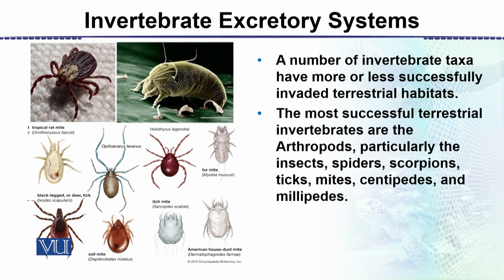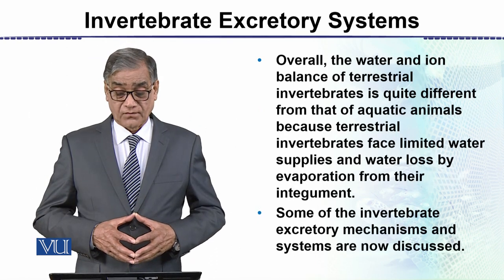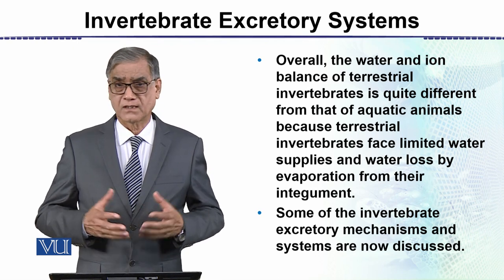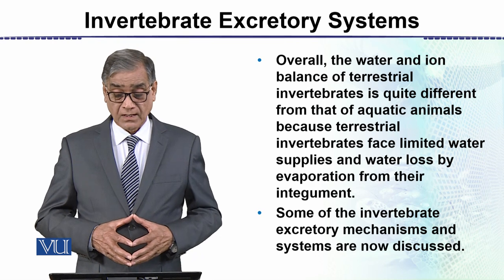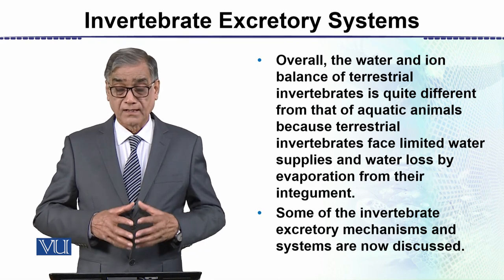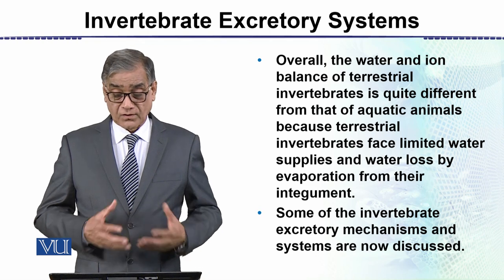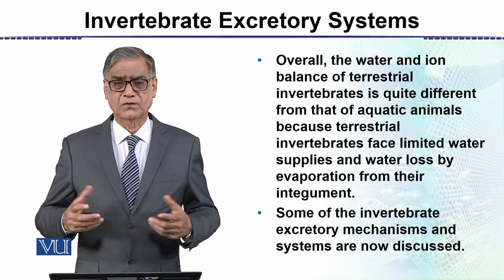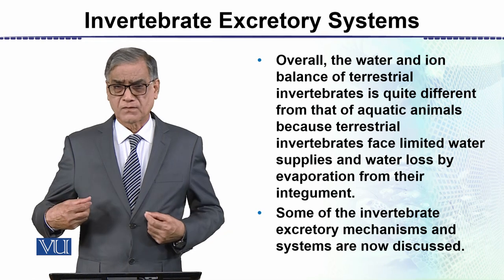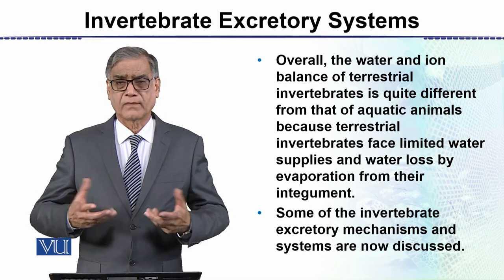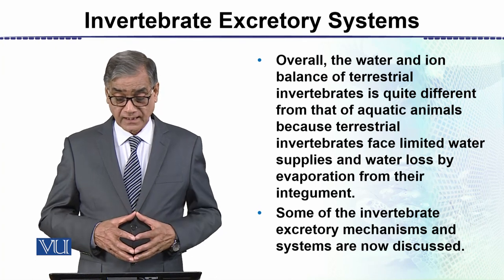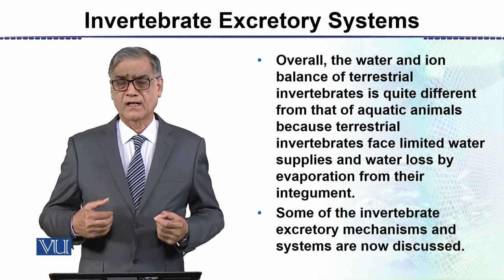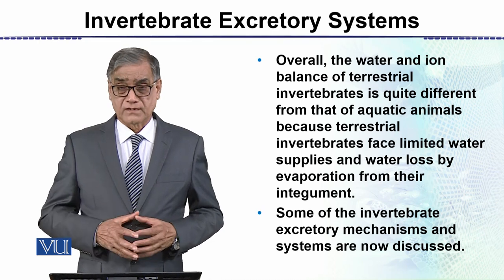Overall, the water and ion balance of terrestrial invertebrates is quite different from that of aquatic animals. Terrestrial invertebrates face a limited water supply, and water loss by evaporation from the integument is a key challenge. Some of the invertebrate excretory mechanisms and systems will now be discussed one after the other in the following lectures.